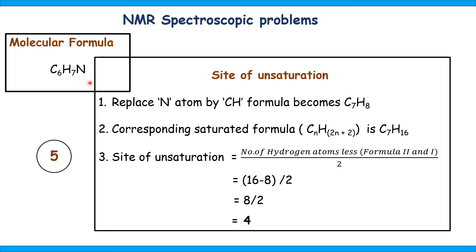Example 5: the molecular formula is C₆H₇N. This formula contains a nitrogen atom, so replace the nitrogen atom by CH. The formula becomes C₇H₈. The corresponding saturated formula is C₇H₁₆. Similar to the previous example, the site of unsaturation equals 8 divided by 2, equal to 4. By these simple steps, we can determine the site of unsaturation or double bond equivalent for any compound.